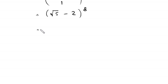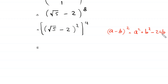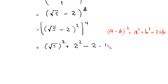Now this expression can be written as root 5 minus 2, whole squared, and whole to the power 4. Using the identity (a−b)² = a² + b² − 2ab, root 5 minus 2 whole squared becomes root 5 squared plus 2 squared minus 2 times root 5 times 2, all to the power 4.